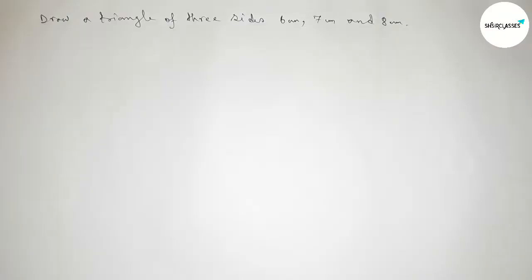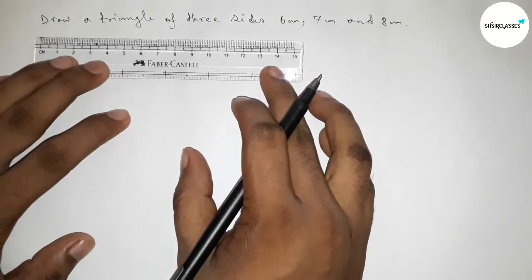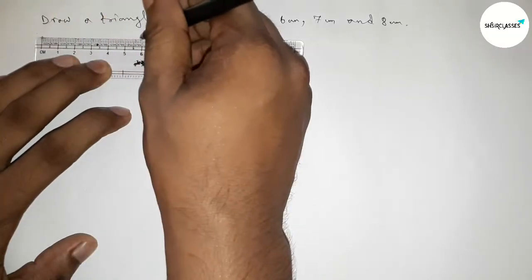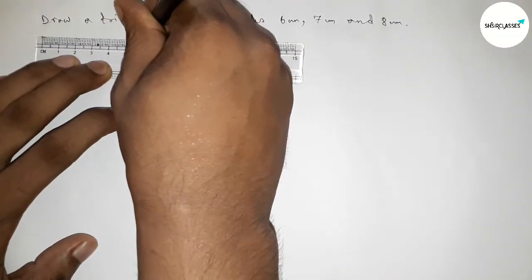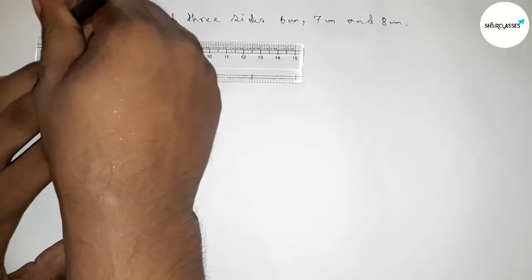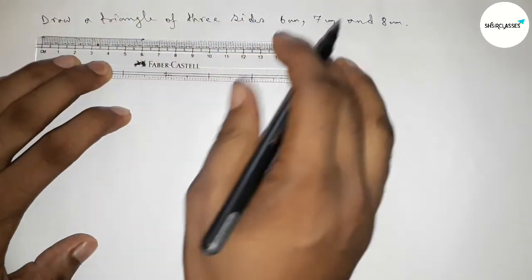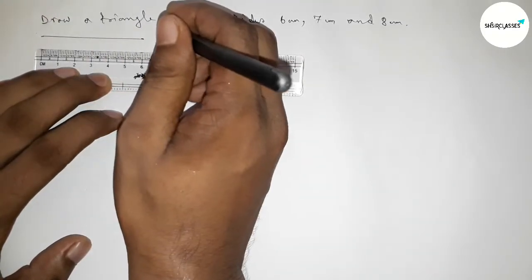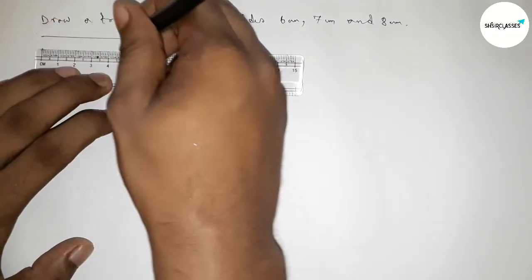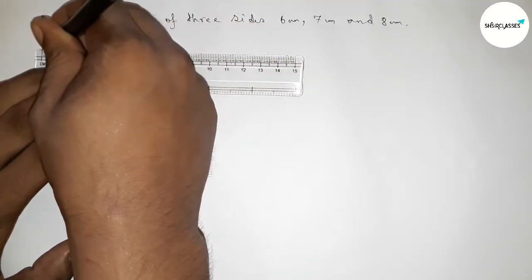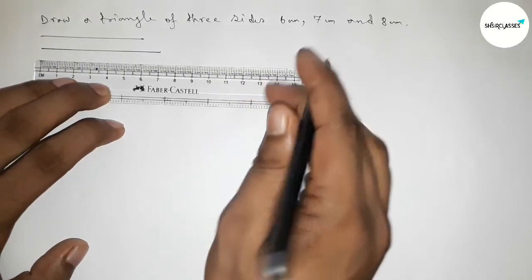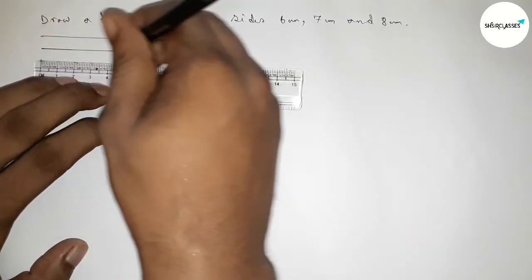First of all we have to draw the given three sides. The first side is 6 centimeter, so this is a 6 centimeter line. Then drawing another line of length 7 centimeter — this is the 7 centimeter line. And last, drawing a line of length 8 centimeter.